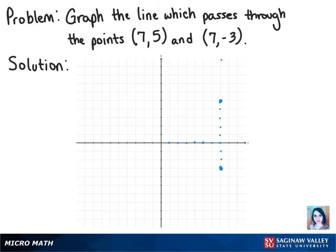And then once we connect these, we have our line. We can see that it is a vertical line because our x-values are the same.